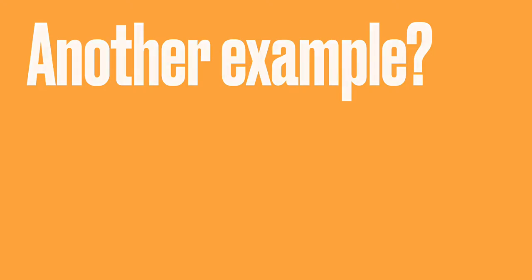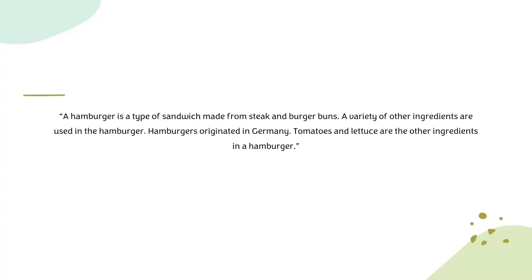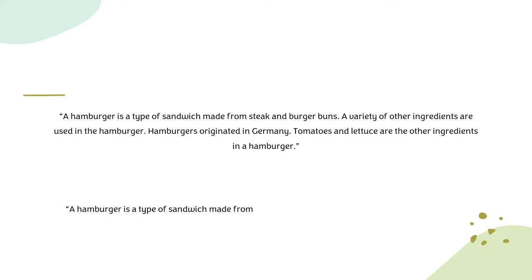Here's another example: 'A hamburger is a type of sandwich made from steak and burger buns. A variety of other ingredients are used in the hamburger. Hamburgers originated in Germany. Tomatoes and lettuce are the other ingredients used in a hamburger.' This paragraph is clearly talking about hamburgers, but the flow breaks when the origin of the hamburger is introduced rather abruptly, and the author then goes right back to talking about ingredients. There's a disconnect due to poor sentence structuring. A better version: 'A hamburger is a type of sandwich made from steak and burger buns. A variety of other ingredients like tomatoes and lettuce are used in a hamburger.' This flows much better.